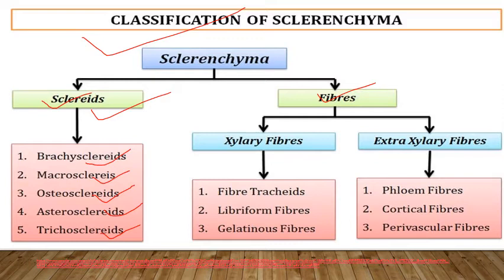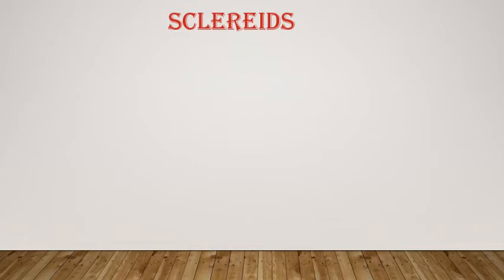Fibers are of two types: xylary fibers, associated with secondary or primary xylem, and extra-xylary fibers, located external to xylem in phloem, cortex, or pericycle regions. Xylary fibers are of three types: fiber tracheids, libriform fibers, and gelatinous fibers. Extra-xylary fibers are of three types: phloem fibers, cortical fibers, and perivascular fibers — present in the pericycle.